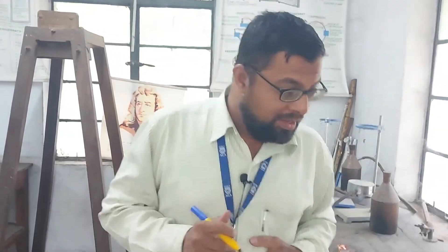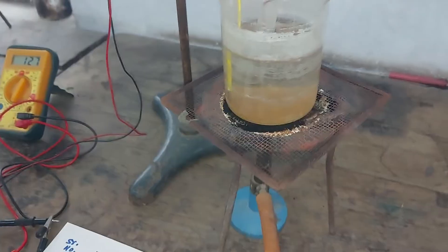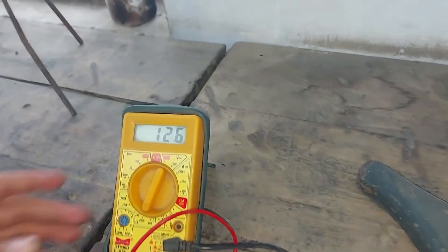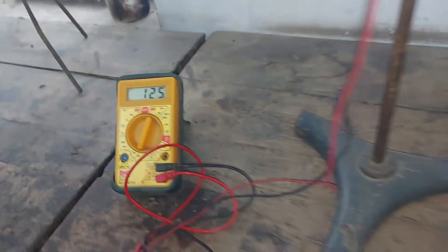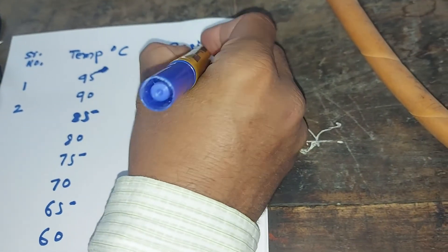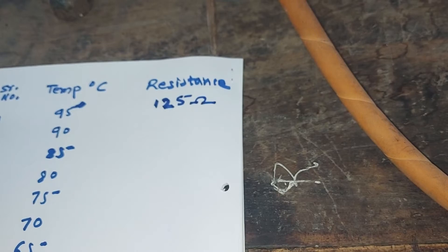Now we have to note down the readings while the temperature goes on decreasing — that means we note down the readings for cooling. The first reading is for 95 degrees centigrade, and for that we got the reading on the multimeter as 125 ohm. All these readings are in ohm — 125 ohm.